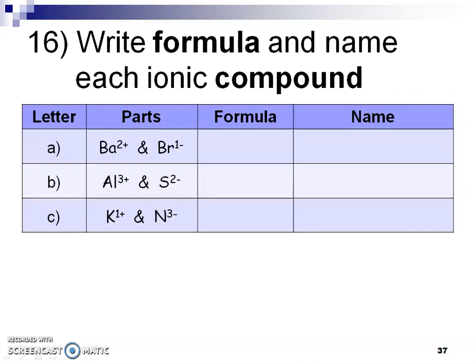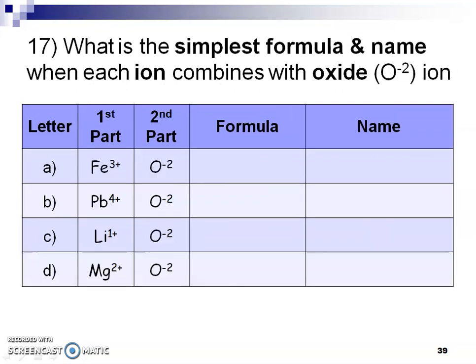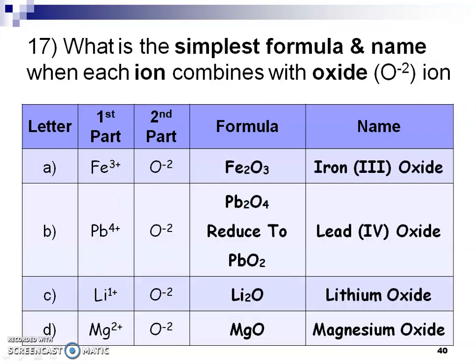Sixteen, and answers. And we want to remember the simplest formula, and this is why that letter B there, you want to make sure that you're reducing that two and four can divide it by two evenly, so the two changes to one and the four changes to two. So it's really, really important to understand that you have to reduce when you can, but we have to remember that our Roman numerals come from the original charge of that metal.